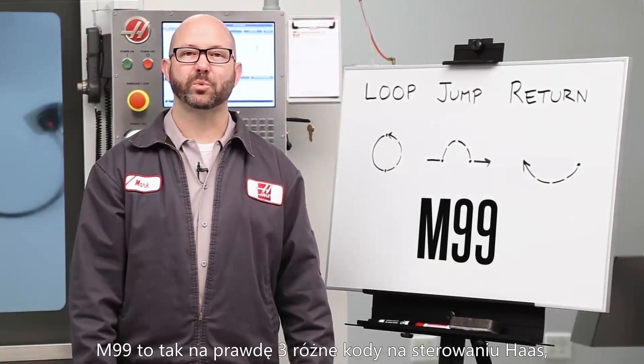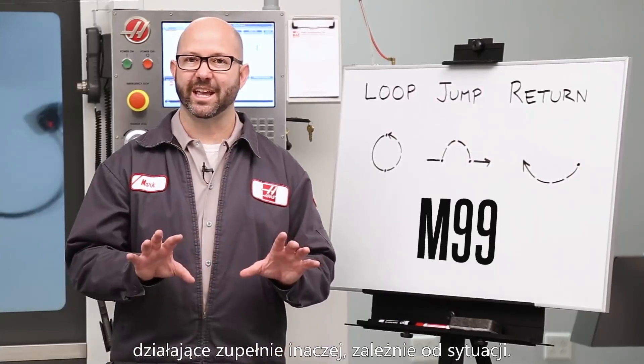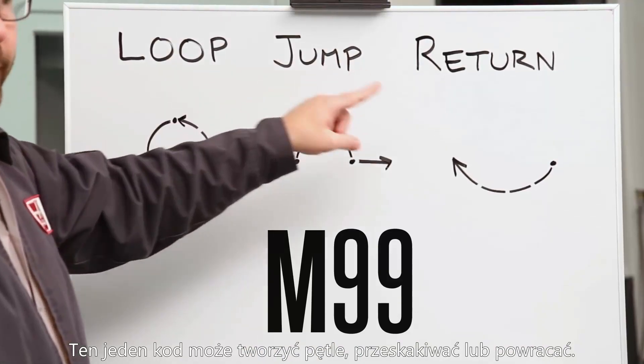An M99 is three different codes on a Haas machine, carrying several different functions in its bag of tricks. This one M code can loop, jump, or return.